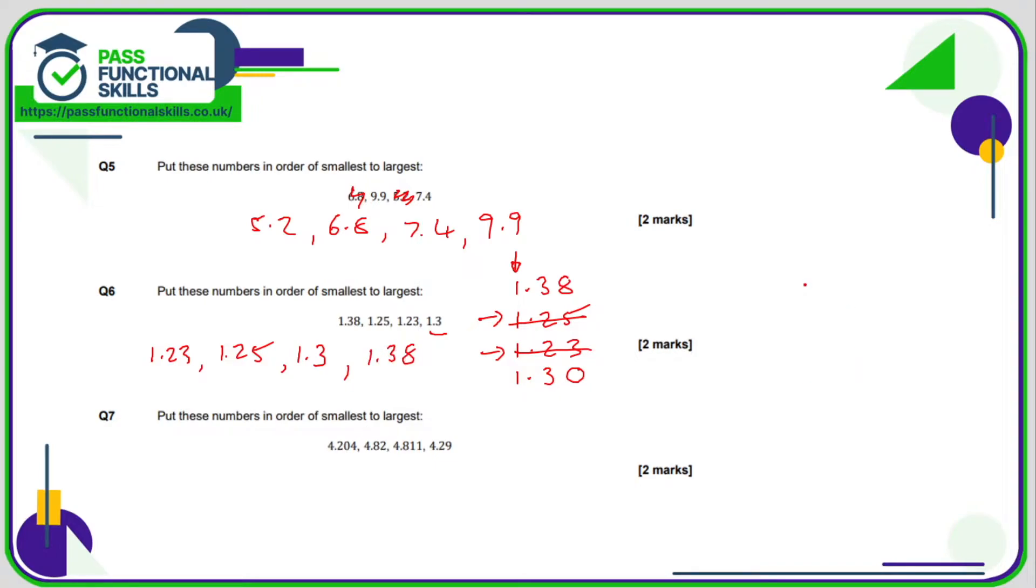Question number 7. Let's write the numbers out: 4.204, 4.82, 4.811 and 4.29. Again any blanks I'll just put a 0 in. So everything is the same in the units. In the tenths column we've got 2, 8, 8, 2. Now 2 is smaller than 8 so one of these two numbers is the smallest.